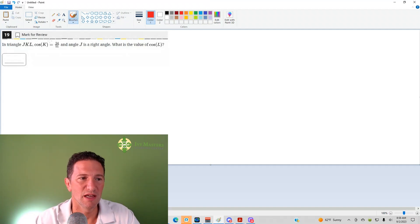Number 19 reads, in triangle JKL, cosine of K equals 24 over 51. Angle J is at a right angle. What is the value of the cosine of L?